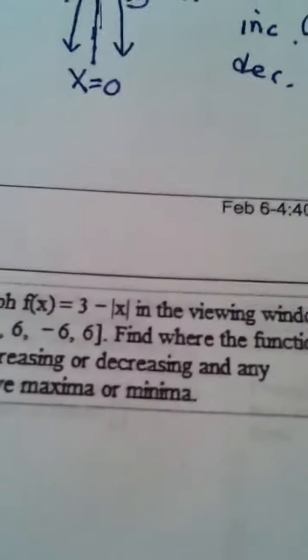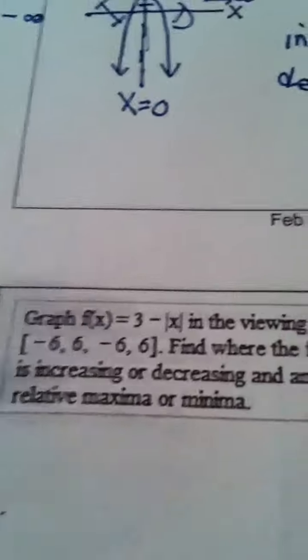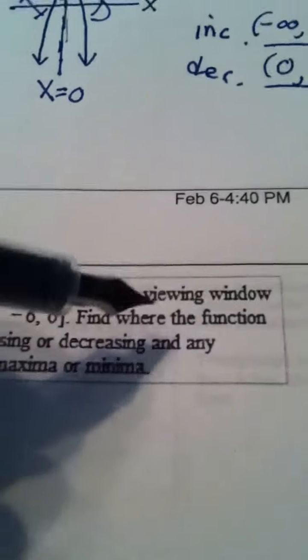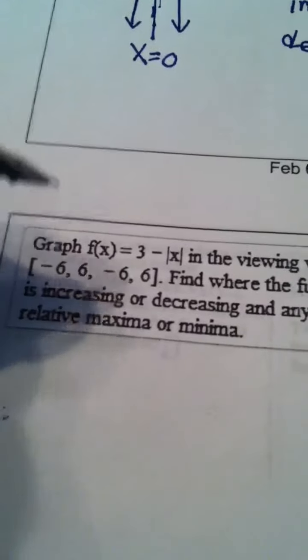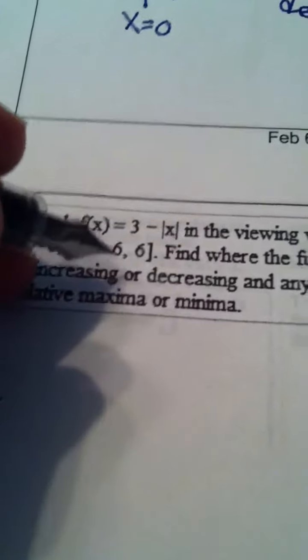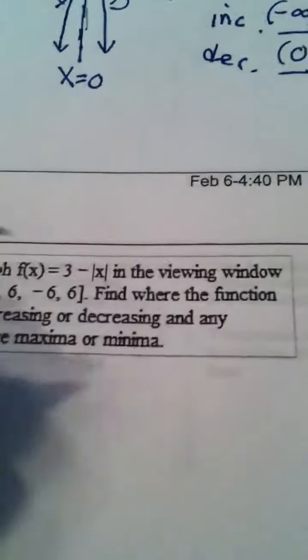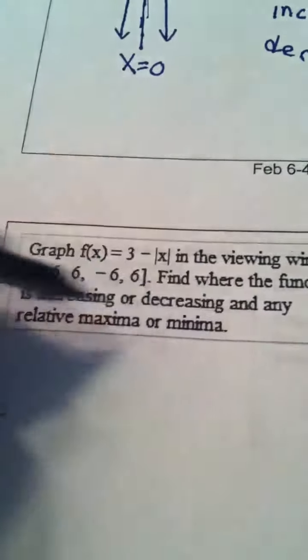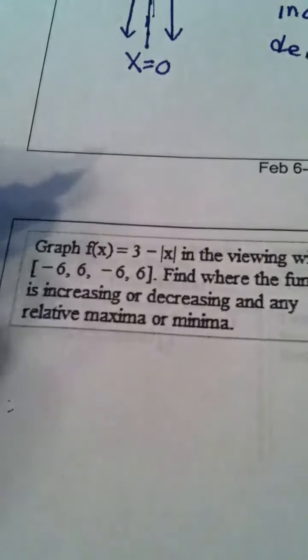Okay, ladies and gentlemen, our next question. We're given the function 3 minus the absolute value of x, and they want us to look at it in the viewing window where x min is negative 6, x max is 6, and the same for y min and y max. And then they want us to find out where the function is increasing or decreasing and state any relative max or min.